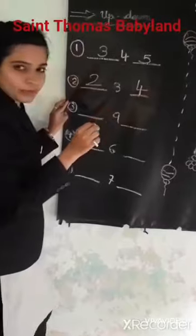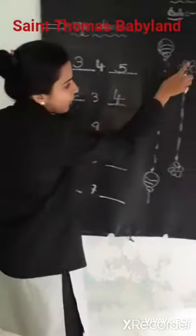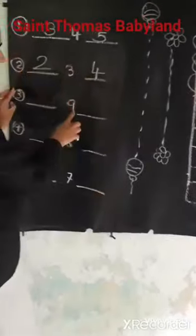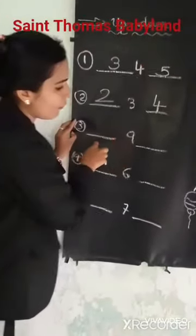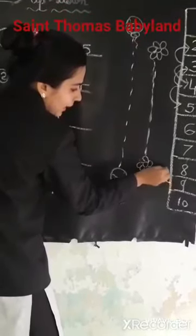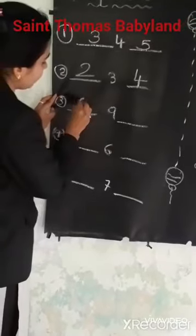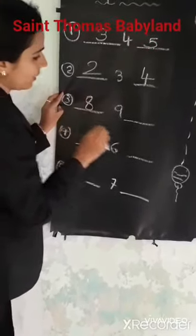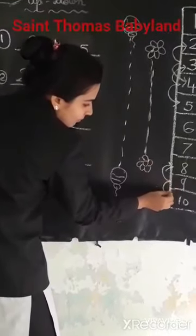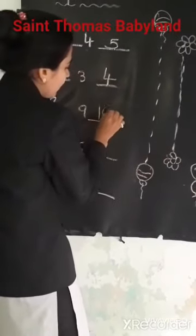Understood? This is 9. Where is 9? Here. 9 up — what will come? 8. So I write here 8. 9 down, what will come? 10. So I write here 10.